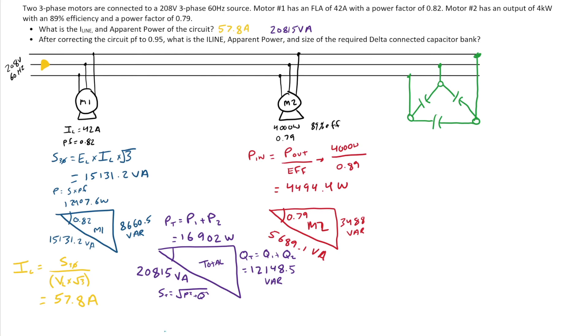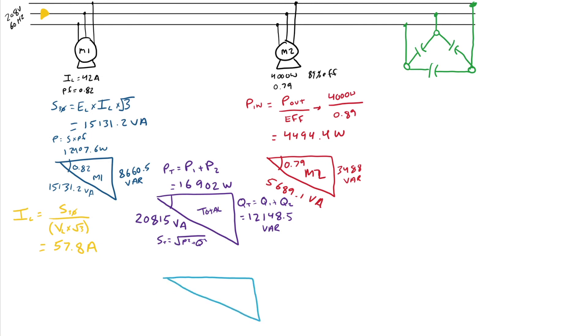So I like to draw a new power triangle. Call this my new power triangle. I know my power factor is 0.95. I'm told that's what I'm correcting it to. And I know my wattage won't change. 16,902 watts. Awesome. So now what I can do is I can do my standard triangle math. I like to go 16,902 divided by 0.95 to get a new VA of 17,791.6 VA.